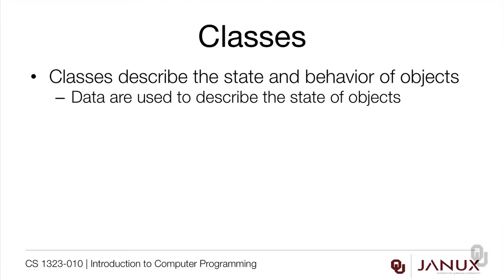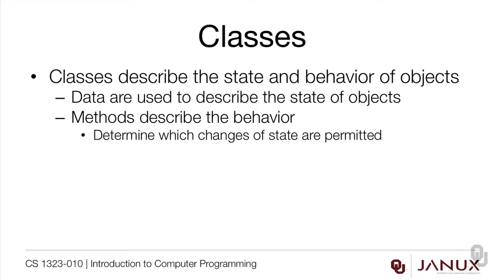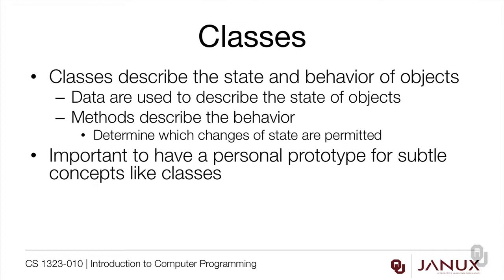Classes describe the state and the behavior of objects. Data are used to describe the state, and methods are used to describe the behavior. You can think about the behavior as being which changes in state are permitted. For example, a legal change of state for the frog would be making a jump to the left or making a jump up or down. The frog isn't allowed to jump on the diagonal — that's a change in state that isn't allowed.